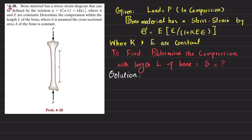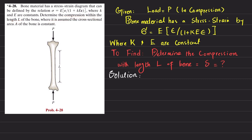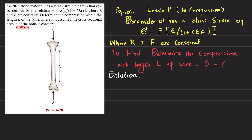Welcome back. Problem 4-28: bone material has a stress-strain diagram defined by the relation sigma equals E times epsilon divided by 1 plus k times E times epsilon, where k and E are constants. Determine the compression within length L of the bone, where the cross-sectional area is constant. The bone is acted upon by a compressive load P, with length L and constant cross-sectional area.